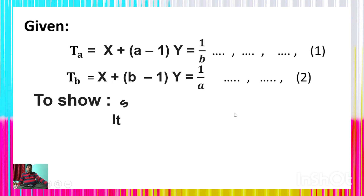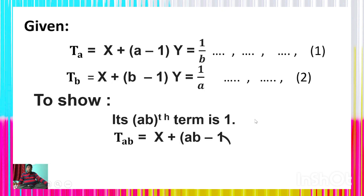We have to show that its ABth term is 1, which means a_ab = x + (ab−1)y = 1. This is what we have to prove. This is one of the interesting and fundamental problems based on the concept of arithmetic progression. Please try for a while.